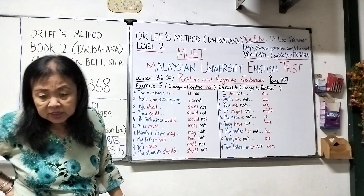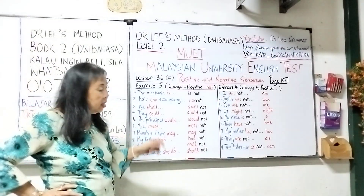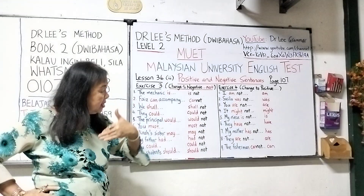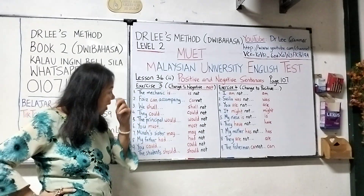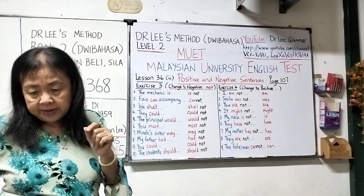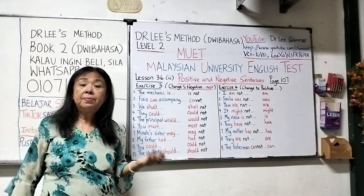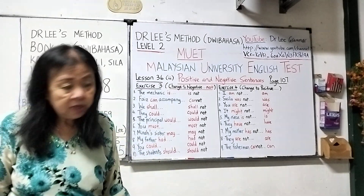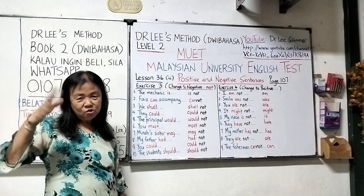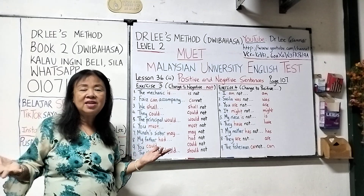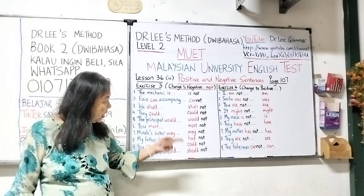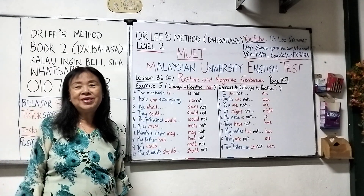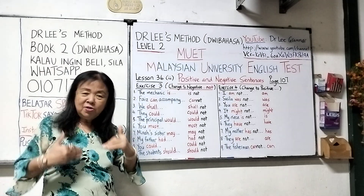Number five: 'My niece is not watching television in the living room.' Change to the positive — throw the 'not' away: 'My niece is watching television in the living room.' Number six: 'They have not finished their food.' Change to the positive: 'They have finished their food.' Number seven: 'My mother has not ironed the clothes.' Throw the 'not' away: 'My mother has ironed the clothes.' It automatically becomes a positive statement. Number eight: 'They are not listening to music now.' Change to positive: 'They are listening to music now.' All you have to do is throw the 'not' away.